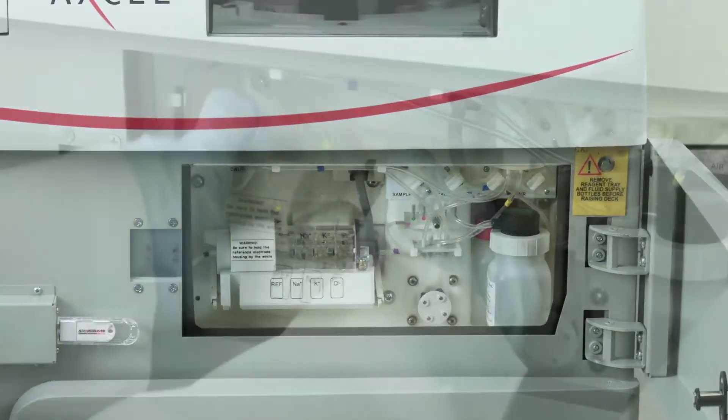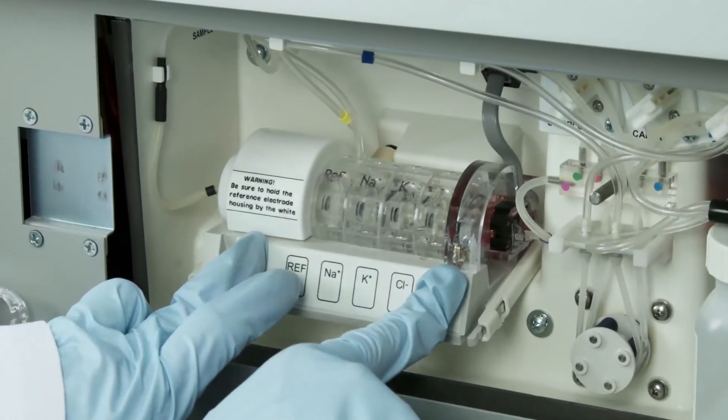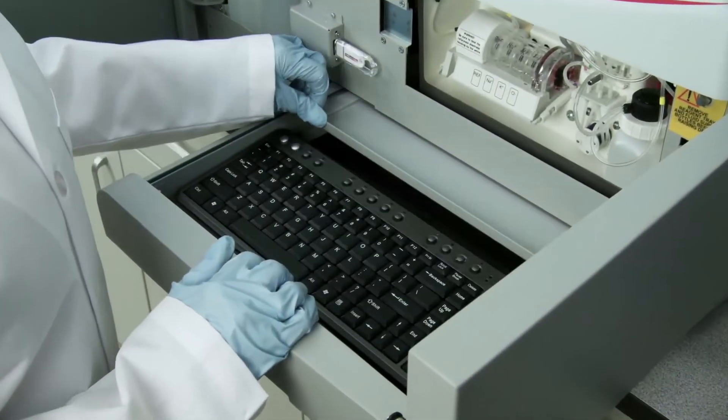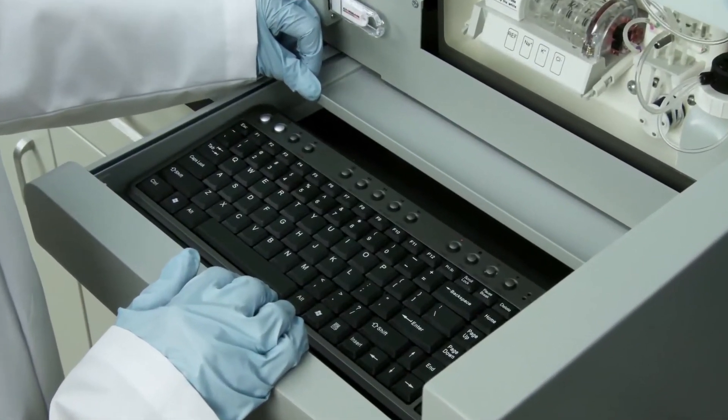Electrolytes are directly measured by ion-selective electrodes that are easily maintained. The wireless keyboard is contained in a drawer below the ISE.